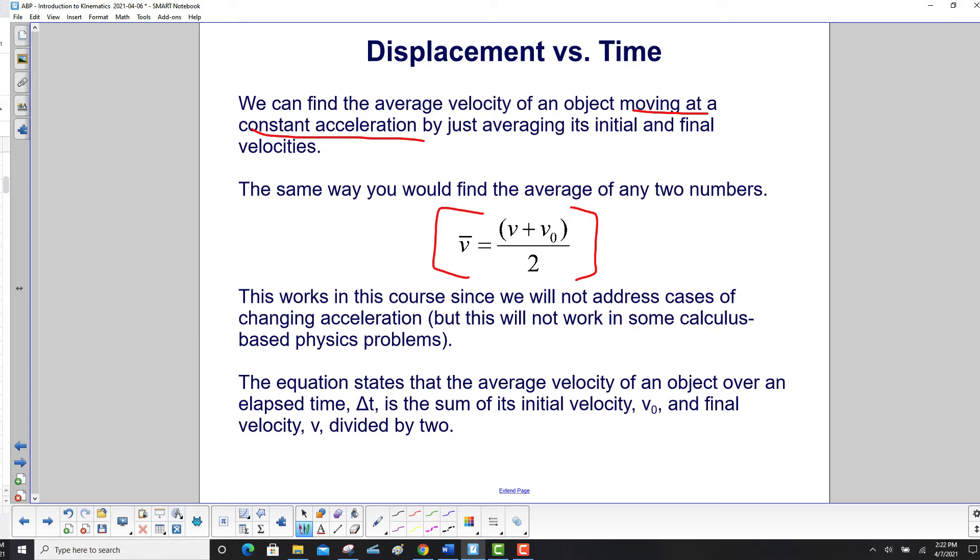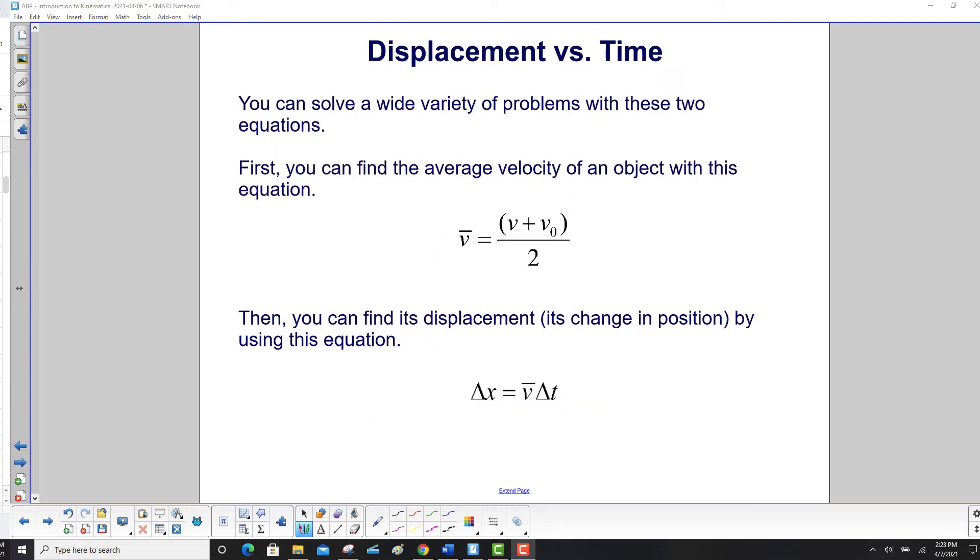Our equation now states that the average velocity of an object over an elapsed time Δt is the sum of its initial velocity v₀ and final velocity divided by two. Notice Δt is not in the equation. You can solve a wide variety of problems with these two equations. First, you can find the average velocity of an object with this one. Then you can find its displacement or its change in position by using this equation.